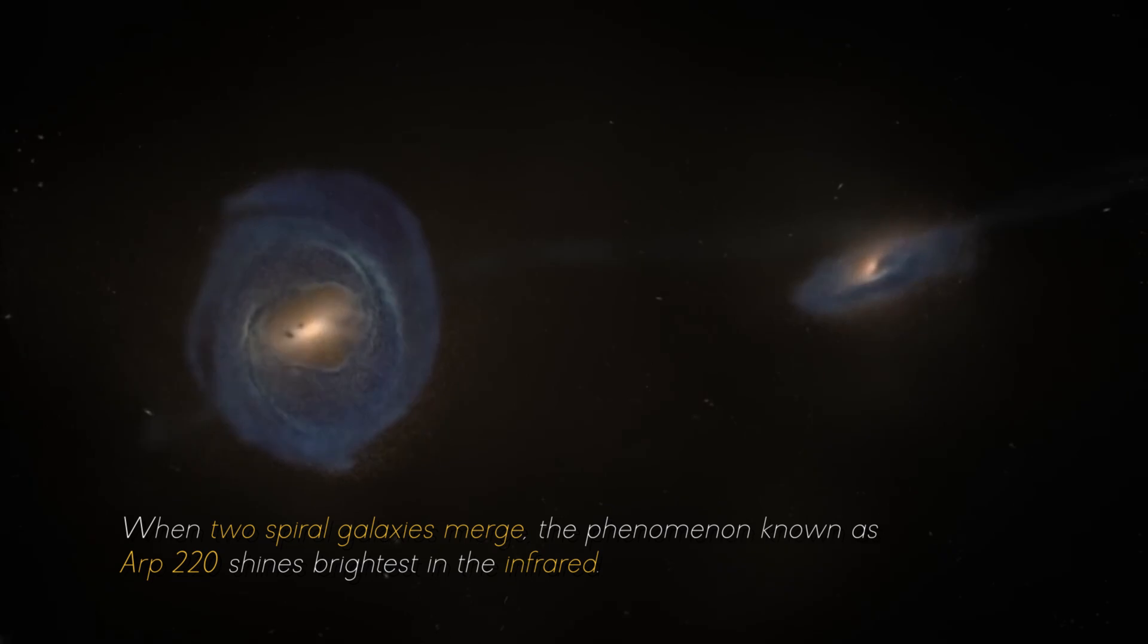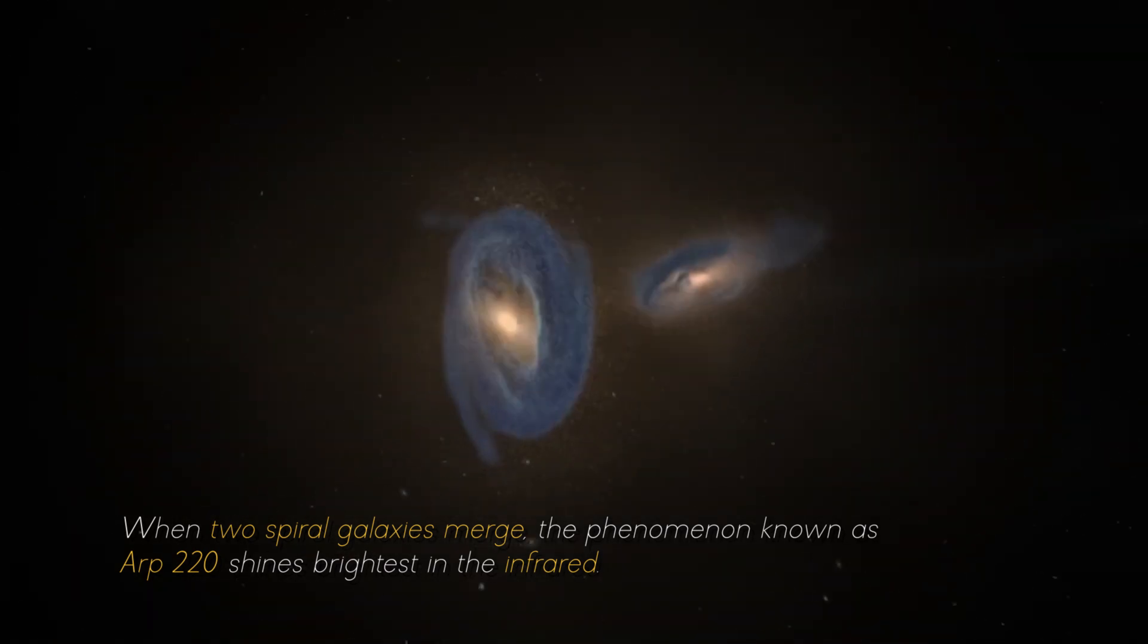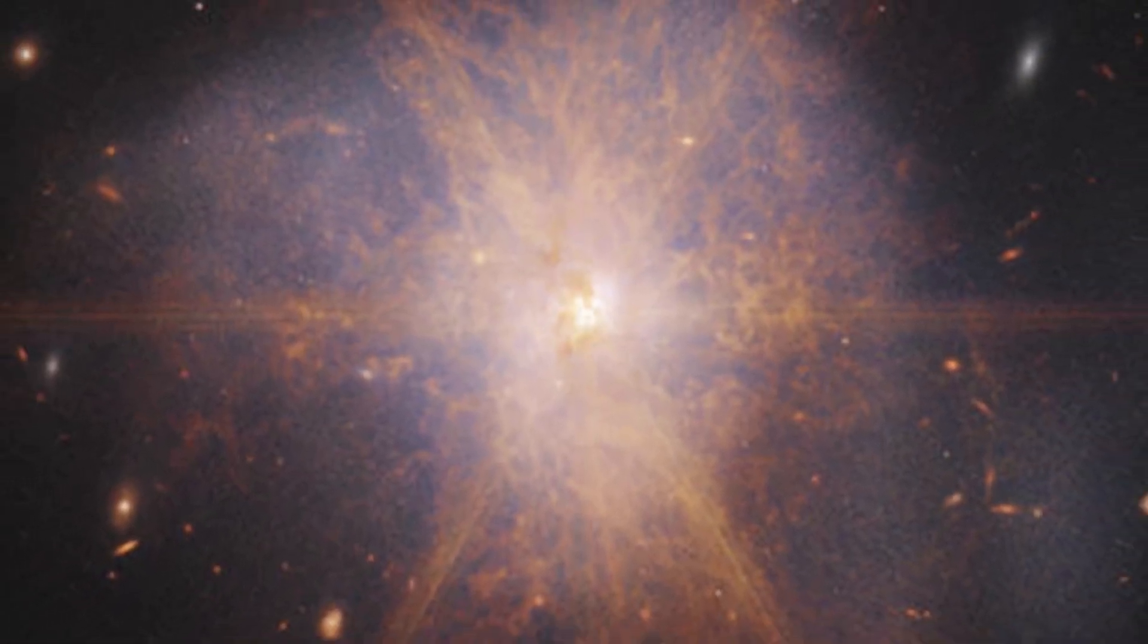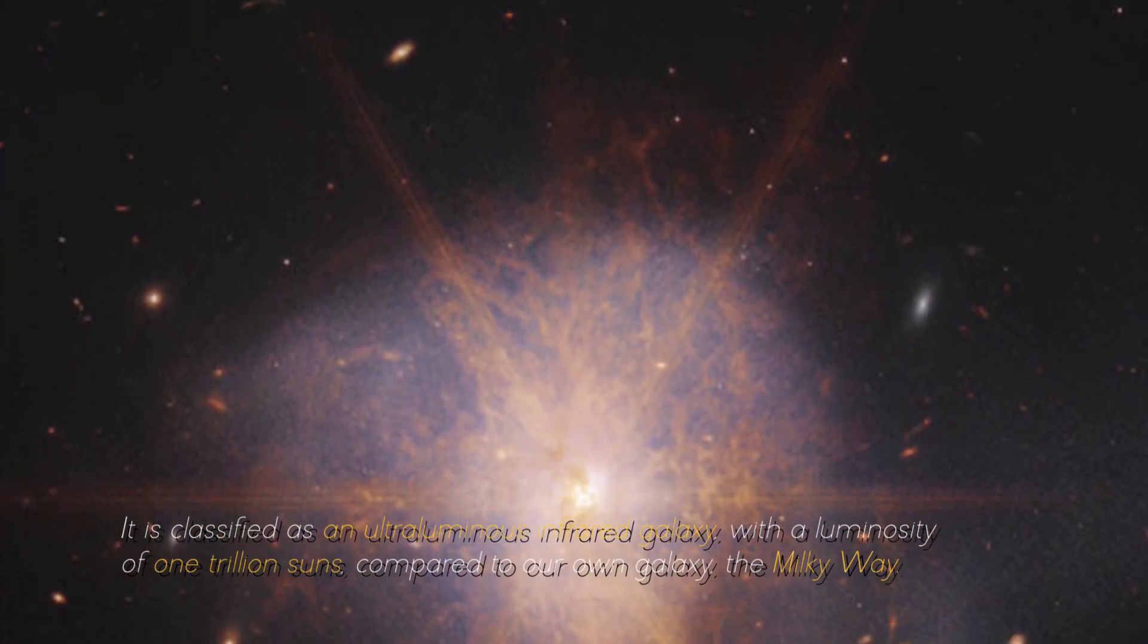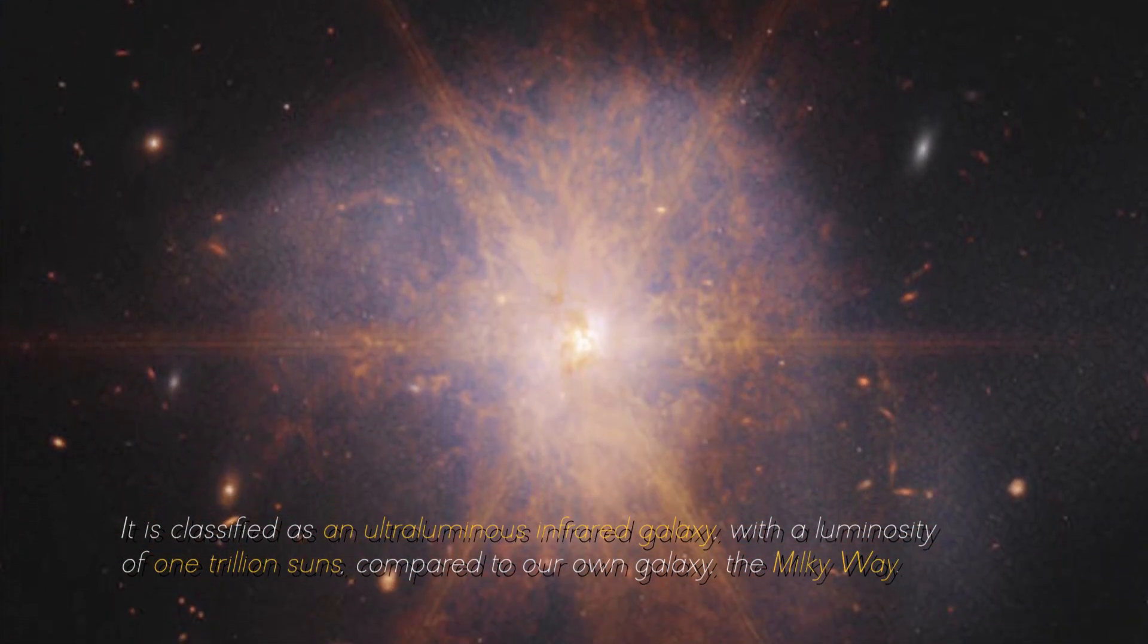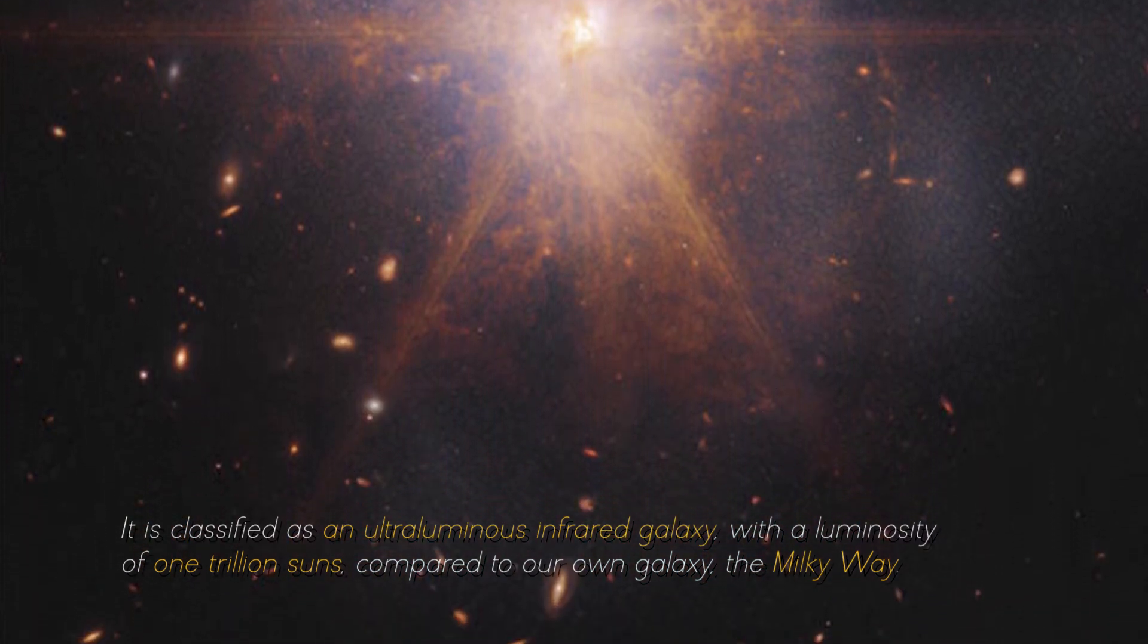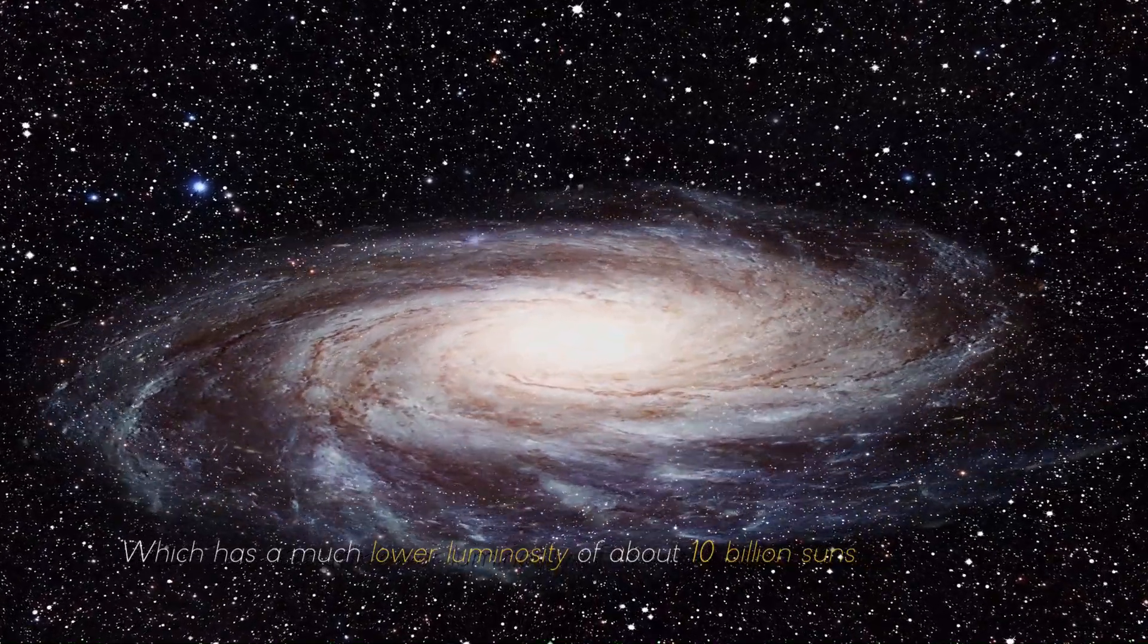When two spiral galaxies merge, the phenomenon known as ARP 220 shines the brightest in the infrared, making it perfect for observation by the James Webb Space Telescope. It is classified as an ultra-luminous infrared galaxy, with a luminosity of 1 trillion suns compared to our own galaxy, the Milky Way, which has a much lower luminosity of about 10 billion suns.